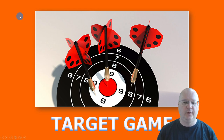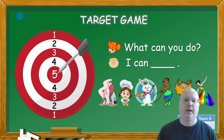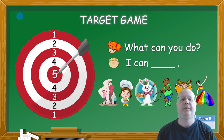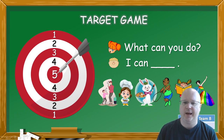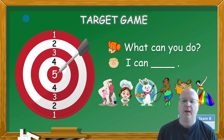You finish your lesson with a target game. If you want to see how I play the target game, click on the link above and you'll see it in a real classroom with real children. This is the lesson closure — students get to practice the question What can you do? and six answers: I can sing a song, I can cook, I can draw, I can skip rope, I can read a book, and I can dance. I hope you enjoyed this walkthrough, and if you liked this lesson please go to my store on Teachers Pay Teachers and buy it. Thank you very much and I'll see you in my next video!